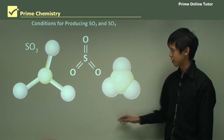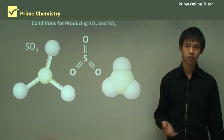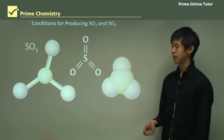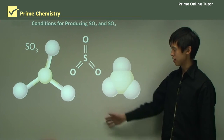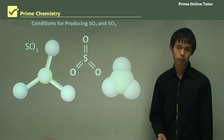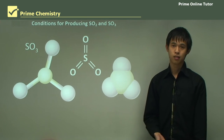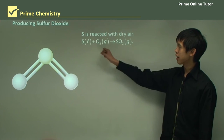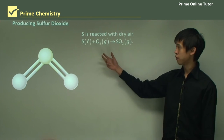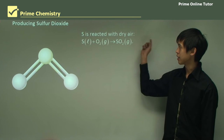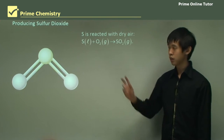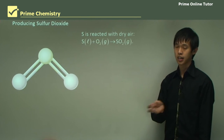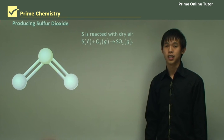Here we have a representation of sulfur trioxide, one of the intermediates in the contact process, and learning how to produce this efficiently is probably the best way to maximize our sulfuric acid production. To produce sulfur dioxide, we react sulfur in pure form with oxygen gas, and the air had to be dry — that gives us the sulfur dioxide.